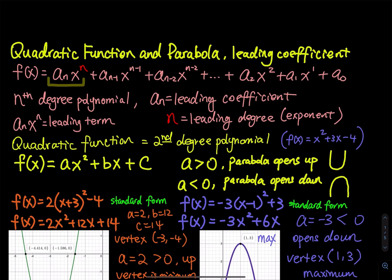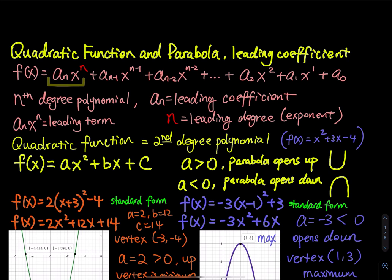An nth degree polynomial means this function has n terms. The first term, a_n x to the n, has the highest exponent, the largest exponent. So we call this the leading term — it is the leader of the entire polynomial. A_n x^n is the leading term. The number in front, a_n, we call the leading coefficient. The nth power we call the leading degree. Degree means exponent.